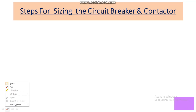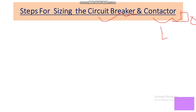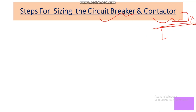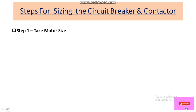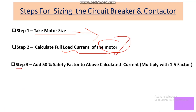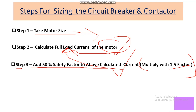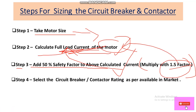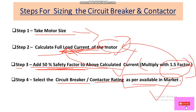We have some steps for sizing the circuit breaker and contactor for the starter. I am talking about DOL starter — not a star-delta starter; we will discuss star-delta contactor selection later. So this is only for DOL starter. In step 1, we take the motor size. In step 2, we calculate the full load current of the motor as per motor capacity. In step 3, we add a 50% safety factor to the full load current, or multiply by 1.5. Finally, we select the circuit breaker and contactor rating as per what is available in the market.